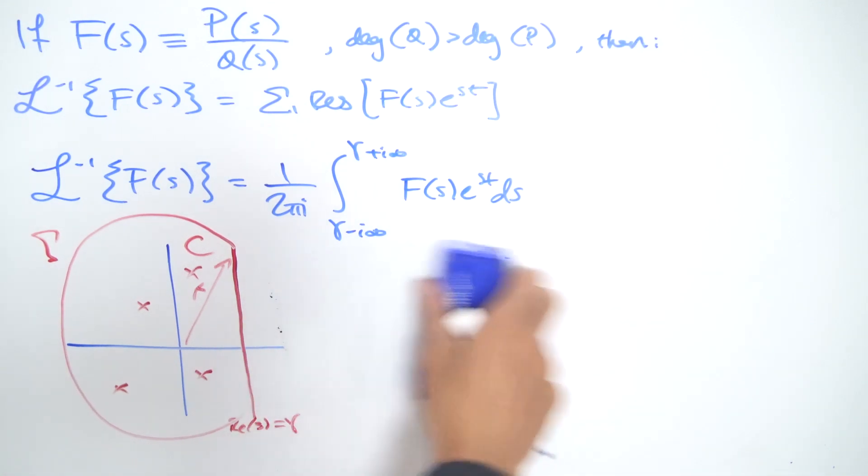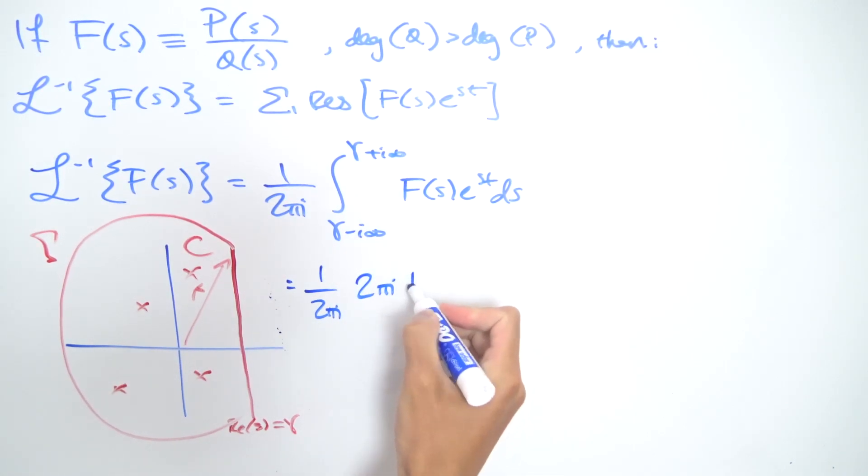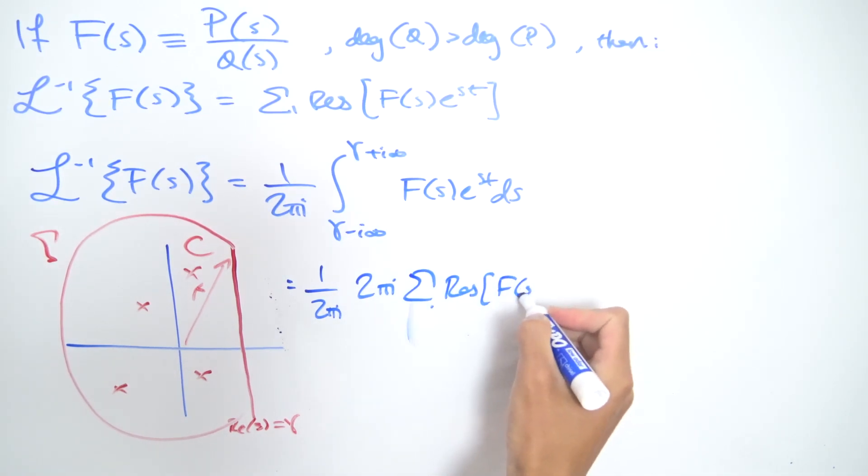Because if you plug everything in, this is 1 over 2πi times this integral, which we just said evaluates to 2πi times the sum of all the residues of F(s) times e^(st).